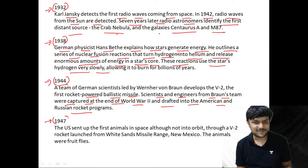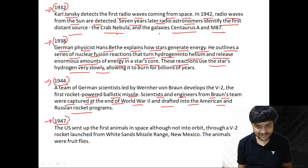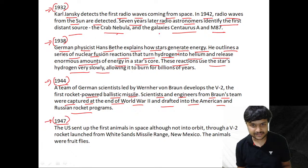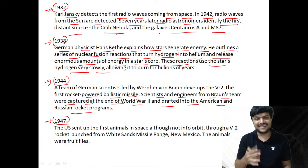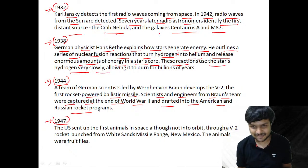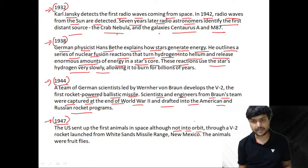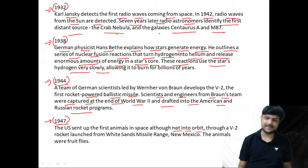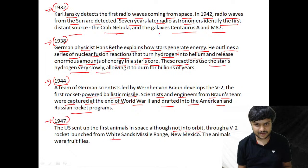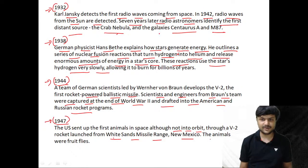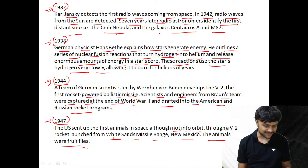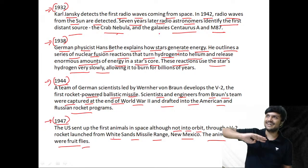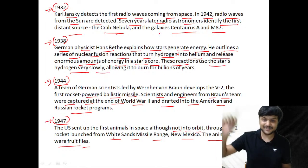In 1947, the US sent the first animals into space — not into orbit, just into space — via a V2 rocket launched from White Sands Missile Range, New Mexico. The first animals sent to space were fruit flies.